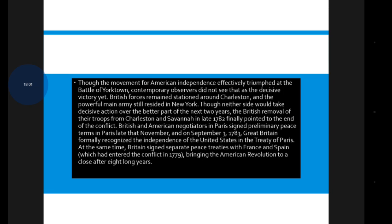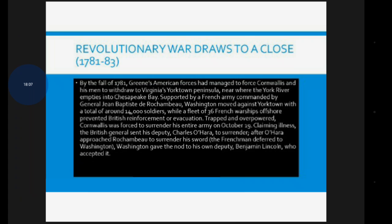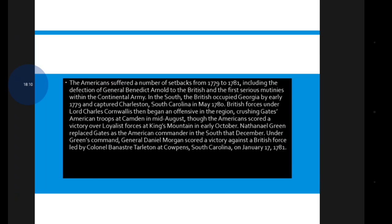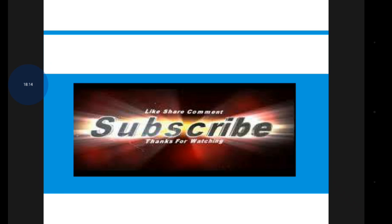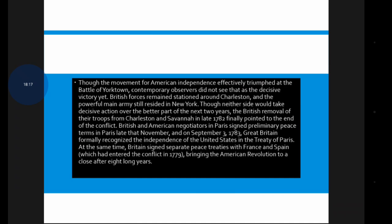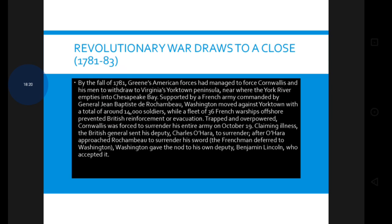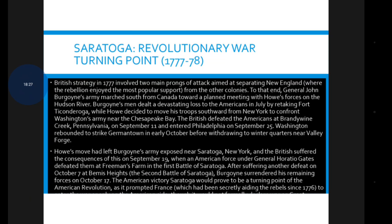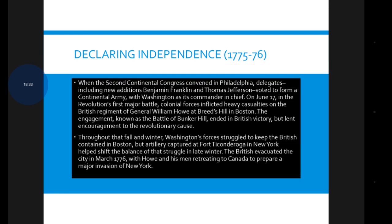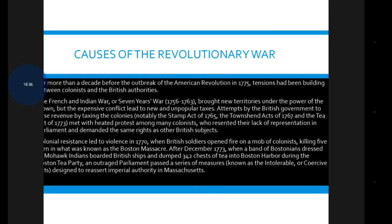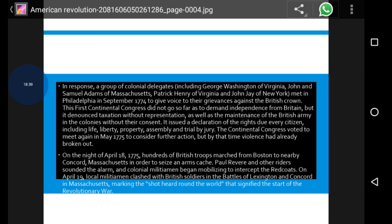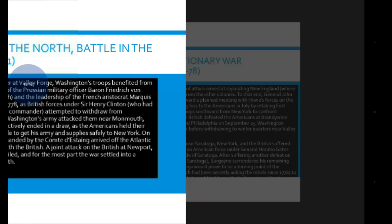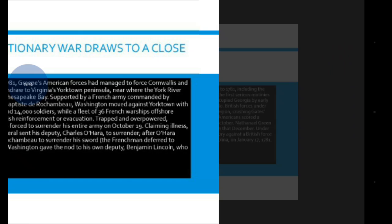This is how the American Revolution happened. In upcoming lectures we will discuss the unification of Germany and Italy. To recap, we covered how the war drew to a close, the stalemate in the north and the battles in the south, the First and Second Battles of Saratoga, how independence was declared, and the causes of the Revolutionary War — all important topics under the American Revolution.